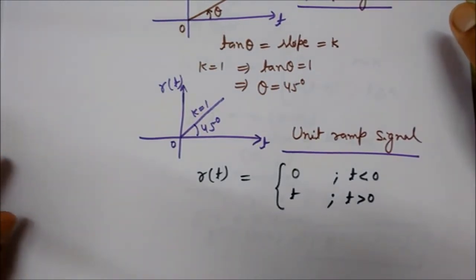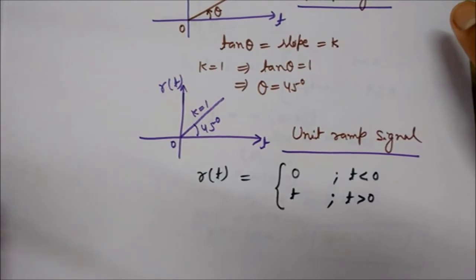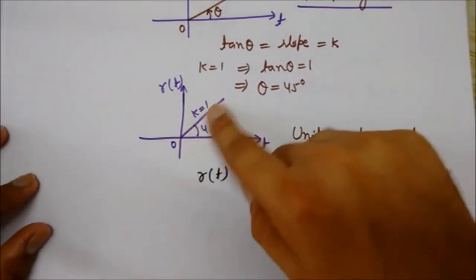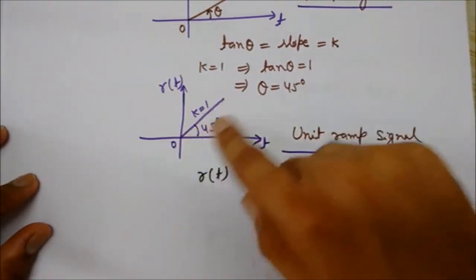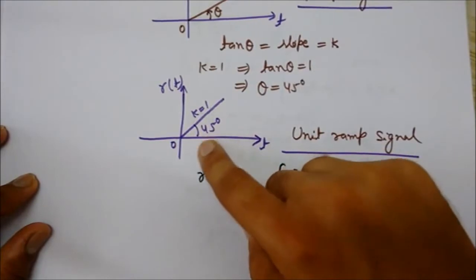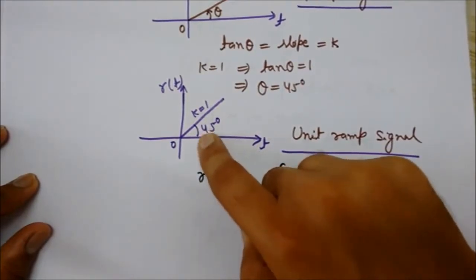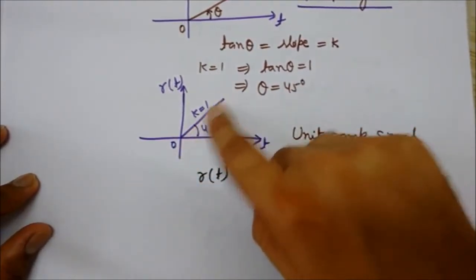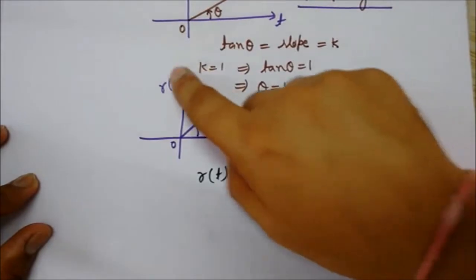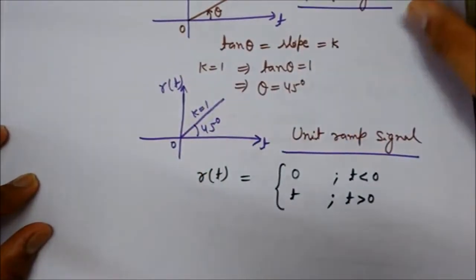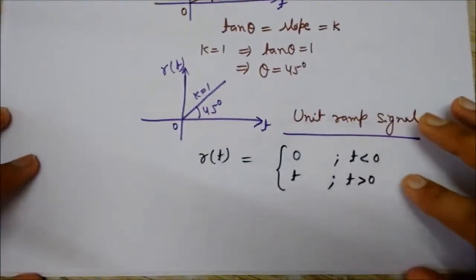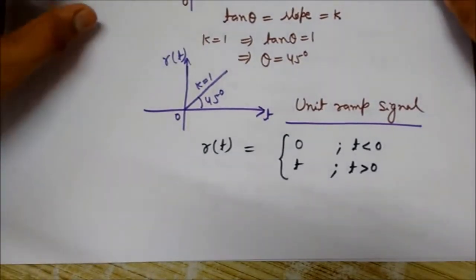The unit ramp signal has a slope of 1. It has been plotted here making an angle of 45 degrees, and since k is 1, it is written as r(t).